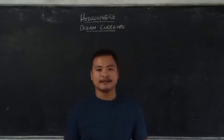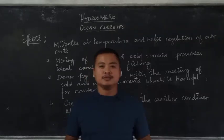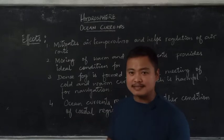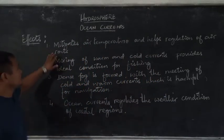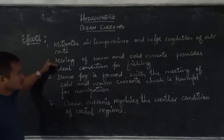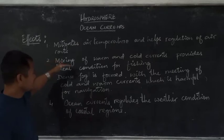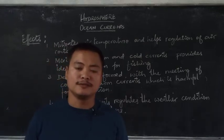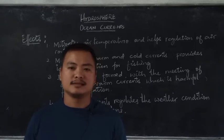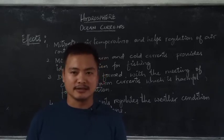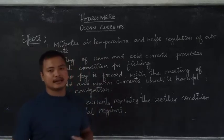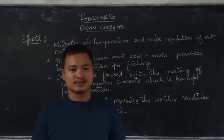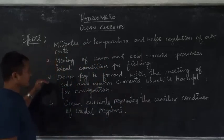As an effect of ocean currents, we can see that ocean currents mitigate air temperature and help in the regulation of air routes. Then, with the mixing of warm and cold currents, it provides a very good or ideal condition for fishing, because it results in the growth of planktons, which is a seafood for aquatic creatures, and hence they get attracted to such conditions.